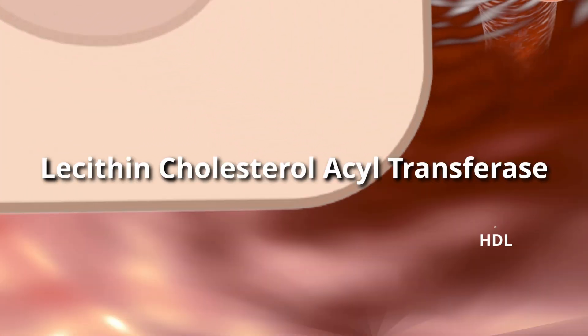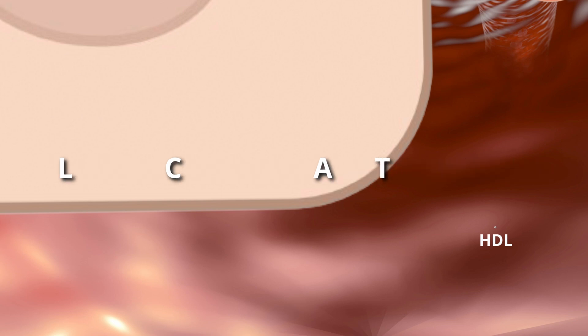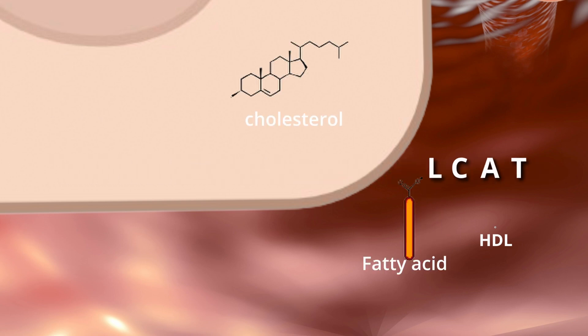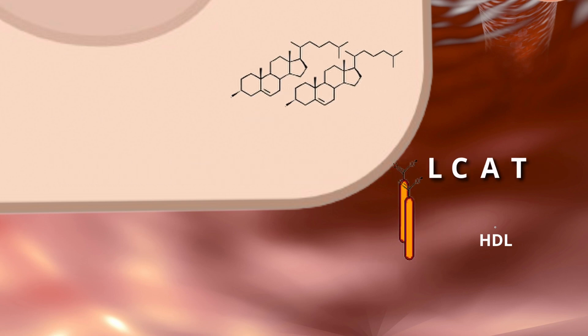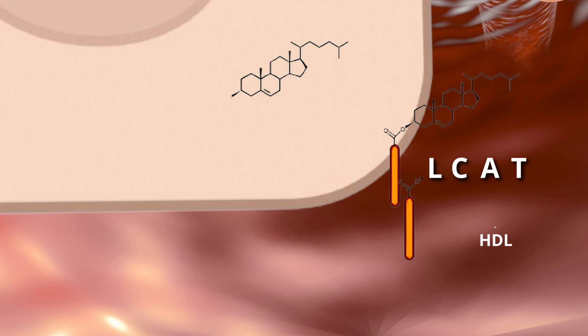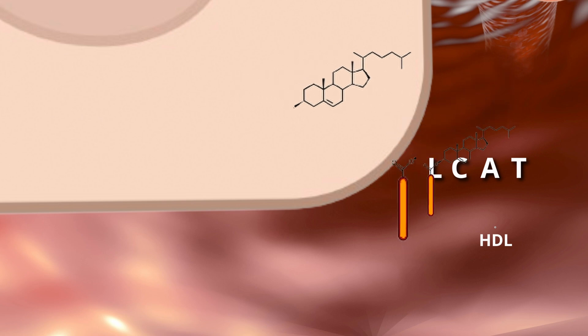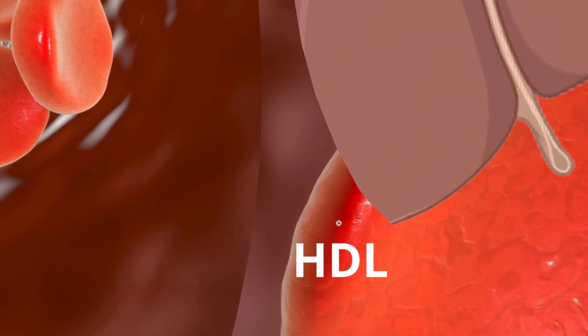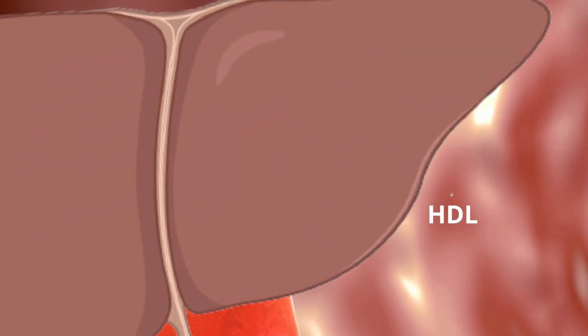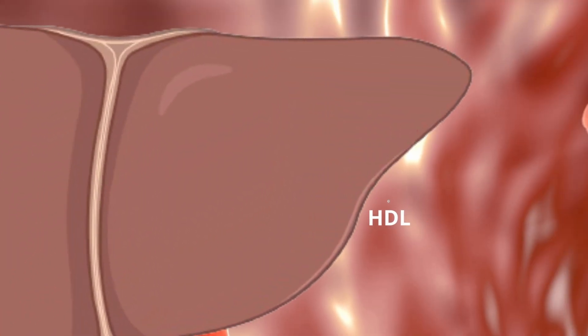The plasma enzyme lecithin cholesterol acyltransferase, LCAT, catalyzes the esterification of free cholesterol present in extrahepatic tissues and transfers it to HDL, scavenging peripheral tissue cholesterol. Matured HDL rich in cholesterol are endocytosed by liver hepatocytes.